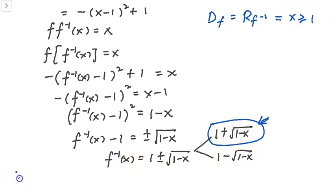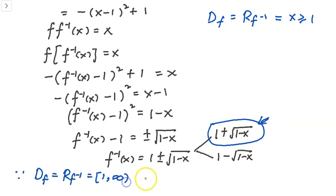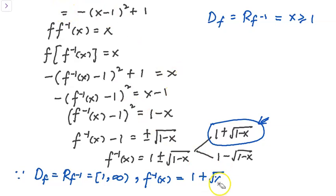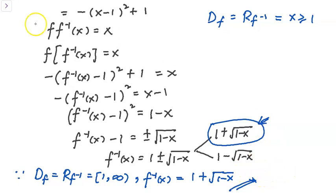Our conclusion: since the domain of f equals the range of f⁻¹, which equals [1, infinity), we choose the inverse function as f⁻¹(x) equals 1 plus square root of (1 minus x). This is our inverse function. That's all, thank you.